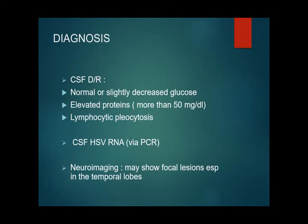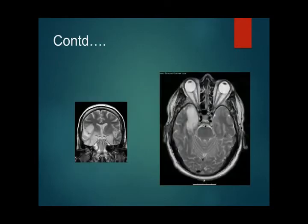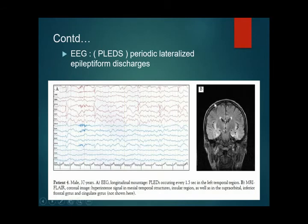Neuroimaging — either CT or MRI — may show focal lesions especially in the temporal lobes, usually bilateral and asymmetrical T2 signal abnormalities. This patient has bilateral asymmetrical temporal lobe T2 hyperintense signals, more on the right side and less on the left. On EEG, you may get periodic lateralized epileptiform discharges (PLEDs) — in this 37-year-old male, the longitudinal montage shows PLEDs occurring approximately every 1.5 seconds.